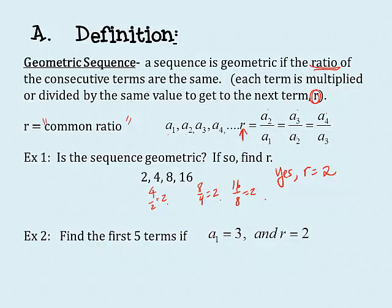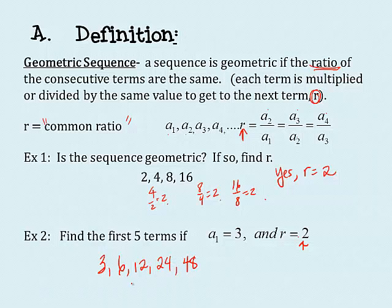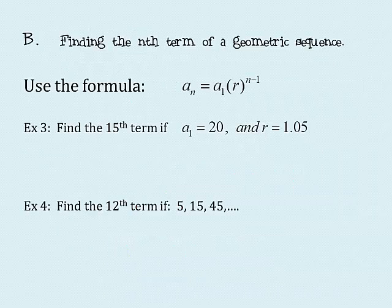On number two, find the first five terms if a1 is 3 and r is 2. We just said it's multiplied or divided—go with multiplied unless it's a fraction. If a1 is 3, that's the first term. To get the next term, I multiply by the common ratio, which is 2. So 3 times 2 is 6, 6 times 2 is 12, 12 times 2 is 24, 24 times 2 is 48. Now I have my five terms.